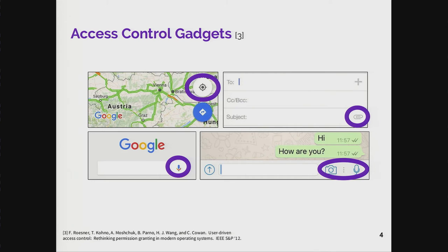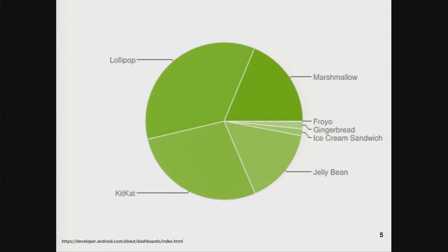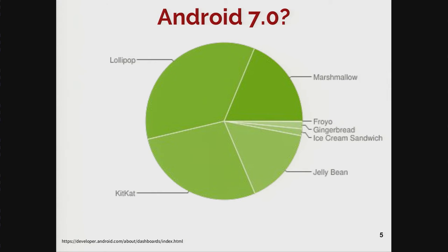This is a great idea that we'd love to get out to users. But there's one problem: the existing user-driven access control approach relies on modifying the operating system, which makes it hard to deploy. Here's a graph of Android version distribution on devices that recently checked into the Google Play Store. The latest Android listed is Android 6 at only 18.7%, and it had been out for over a year. Android 7 had been released but hadn't reached a significant enough percentage of users to even appear on the graph.